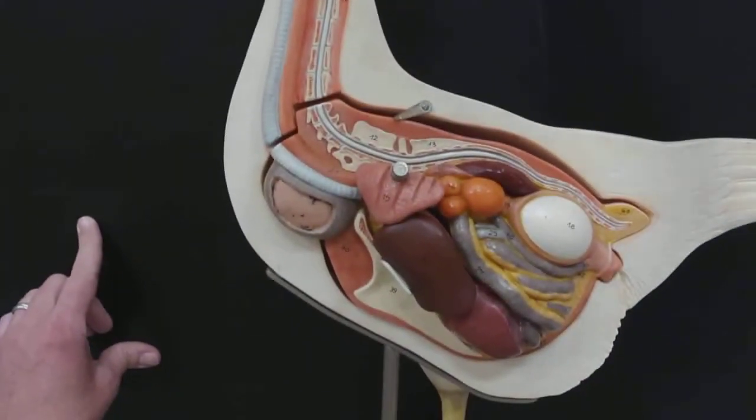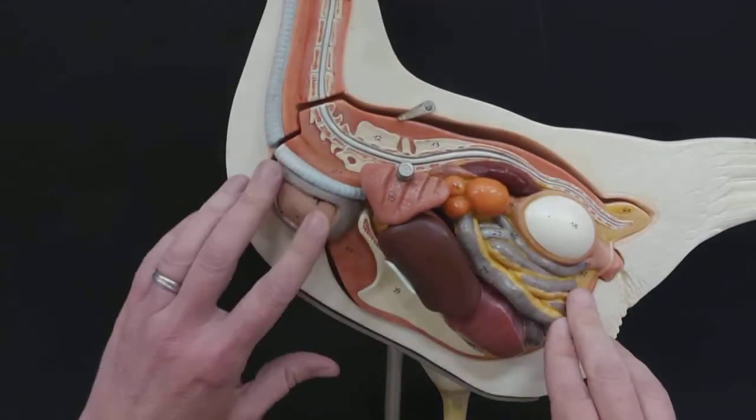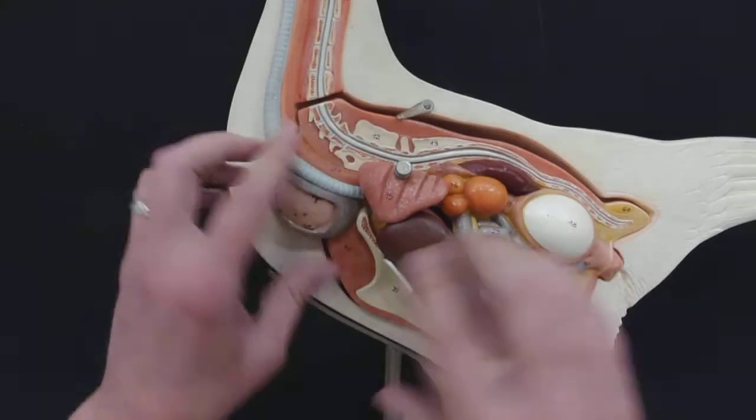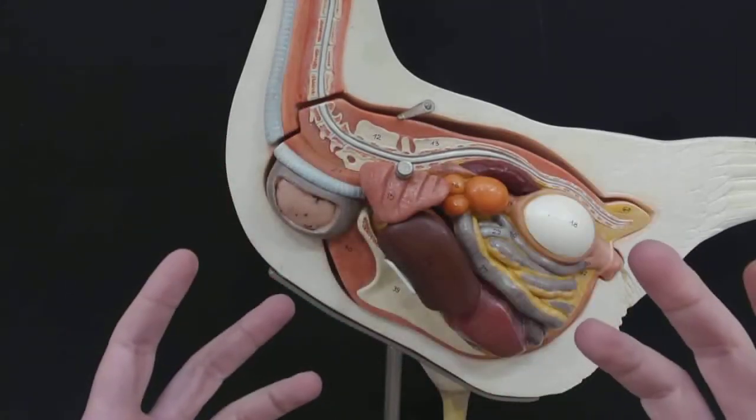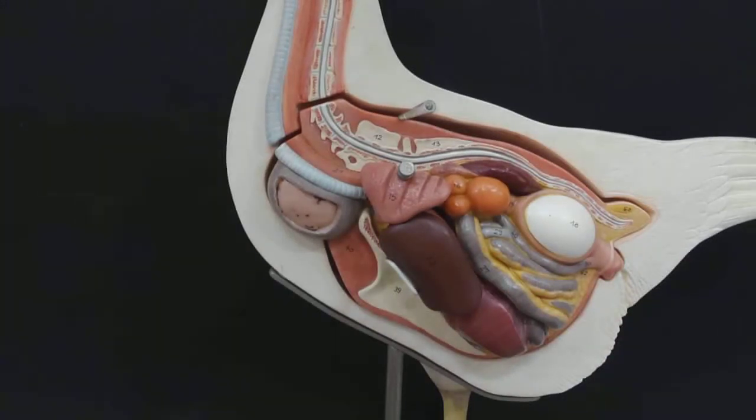And it's going to expand into this region down here, which is known as the crop. Let's move this. Okay, so now we're looking in here. I'm going to go over everything that we see here, and then I'm going to start taking stuff out of the model so that we can really get a good look at it.